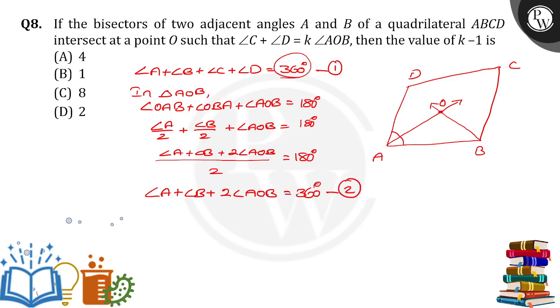By comparing equation 1 and equation 2, we will get angle A plus angle B plus 2 times angle AOB equals angle A plus angle B plus angle C plus angle D.